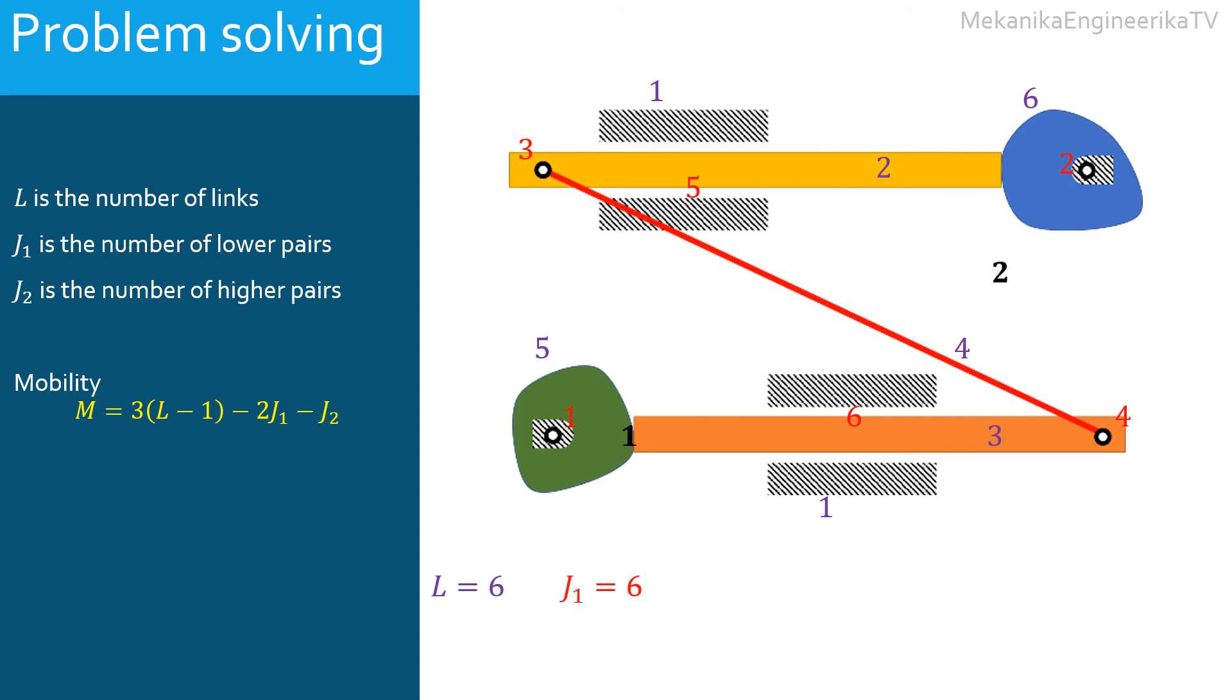We have 2 cam connections between each cam and its follower. These 2 cam kinematic pairs are considered as higher pairs. Hence, J2 is equal to 2.